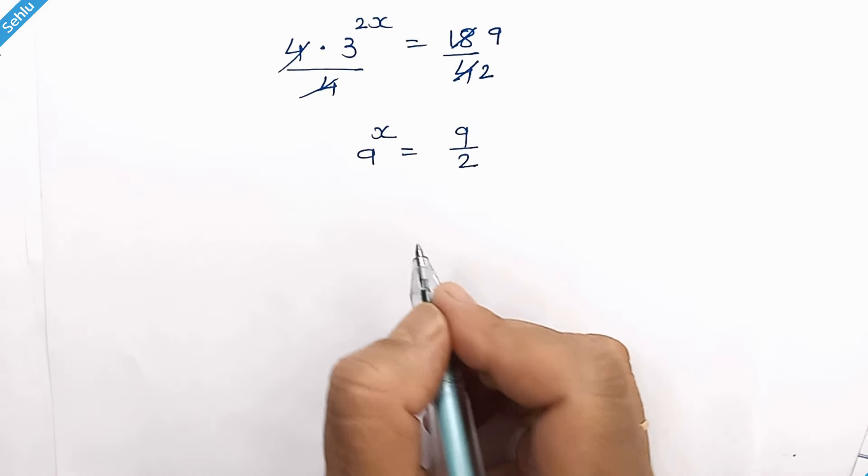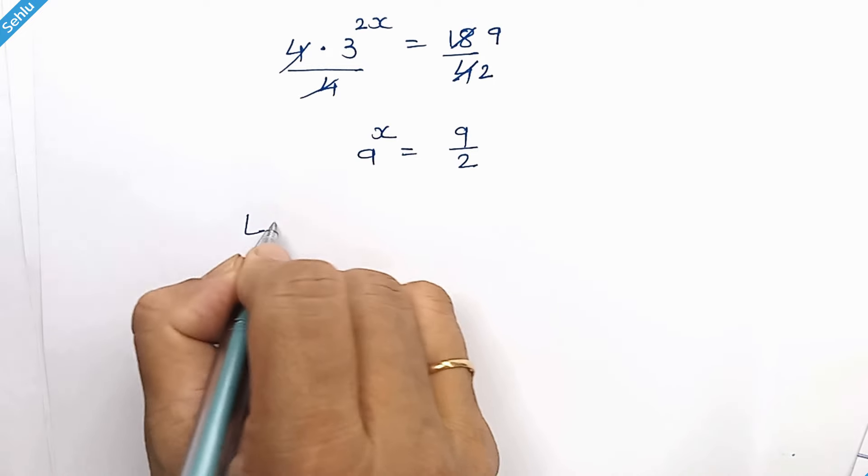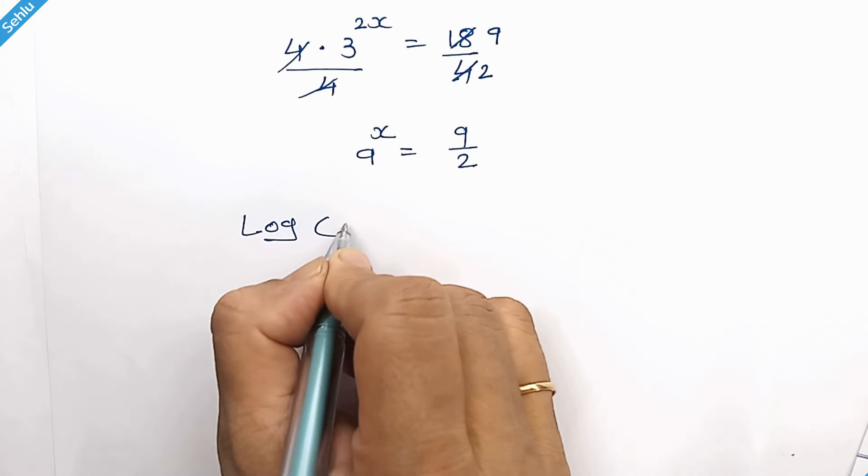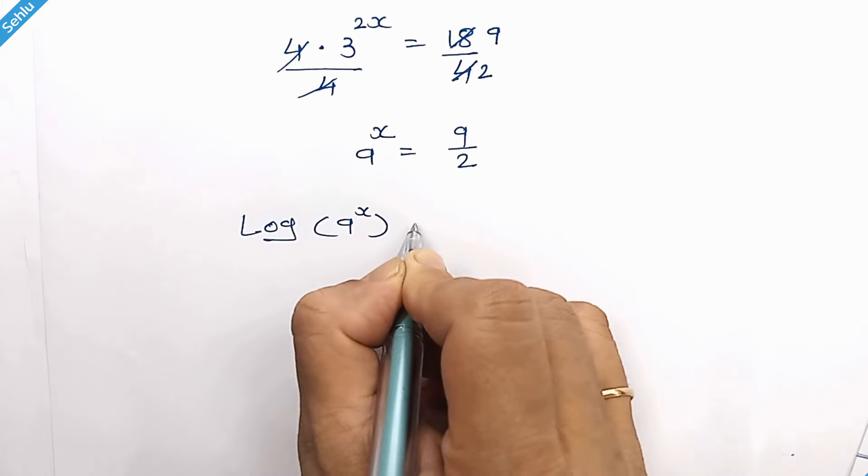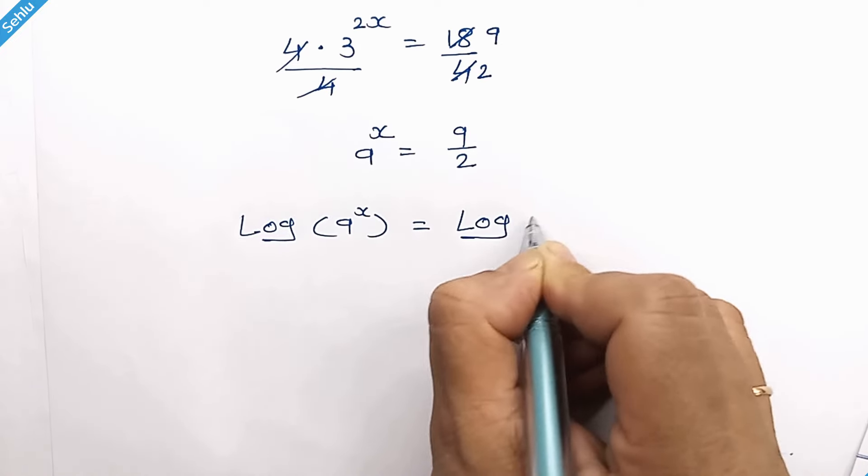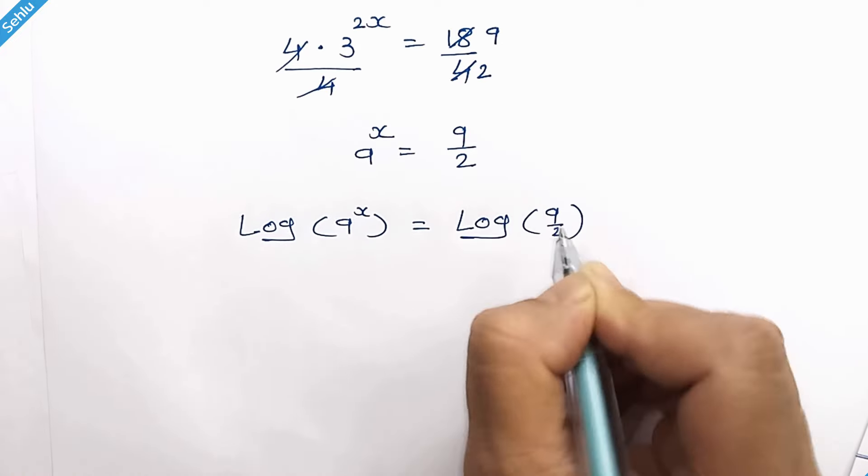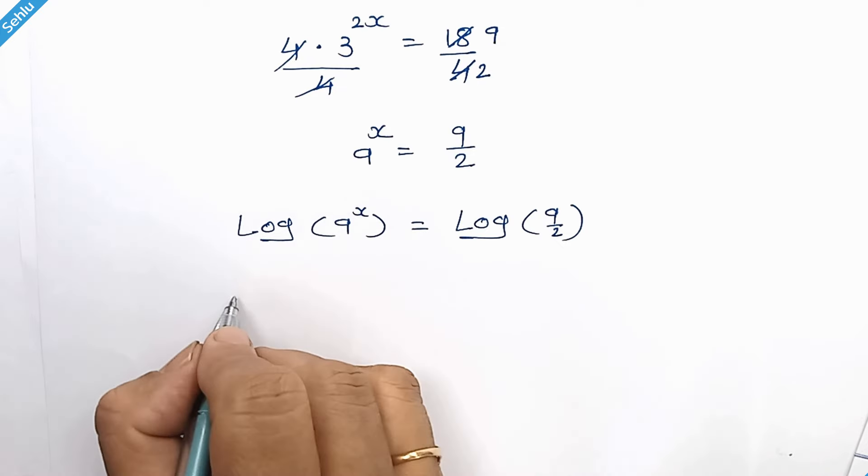Now from here we need to take the log. Log of 9 to the power x equals log of 9 over 2. This x will come out as a factor.